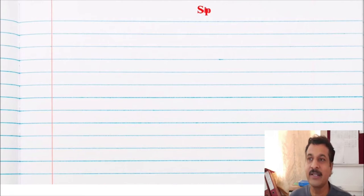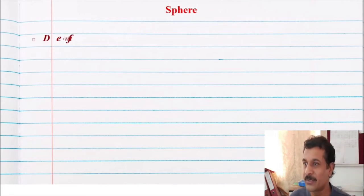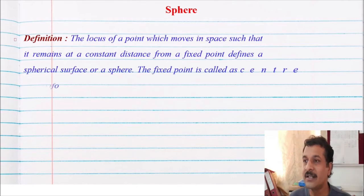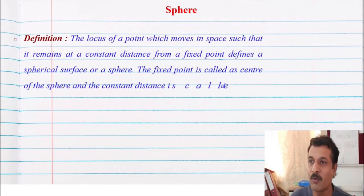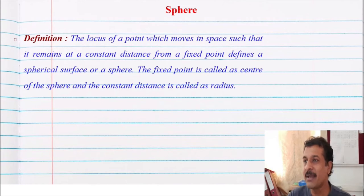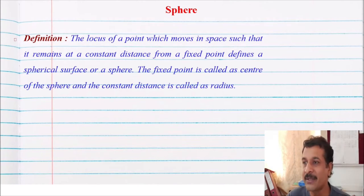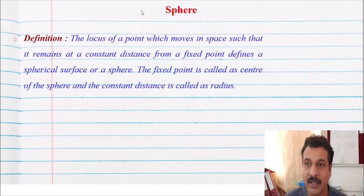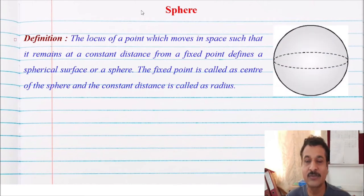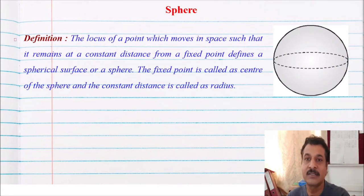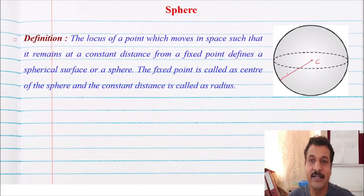Now, what is the definition of a sphere? The definition of a sphere is: the locus of a point which moves in space such that it remains at a constant distance from a fixed point defines a spherical surface or a sphere. You can see in the figure here — C is the centre and this is the radius.